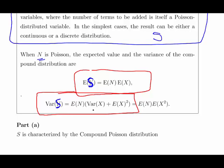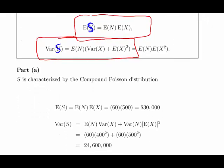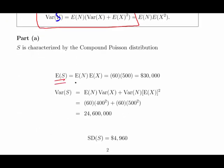Now, just as a remark, the variance of X and the expected... that's everything we have there, actually. That's everything we need. So, the expected value of S is the expected value of N times the expected value of X, which is 60 claims on average per week, and each claim is on average $500, so that means $30,000.